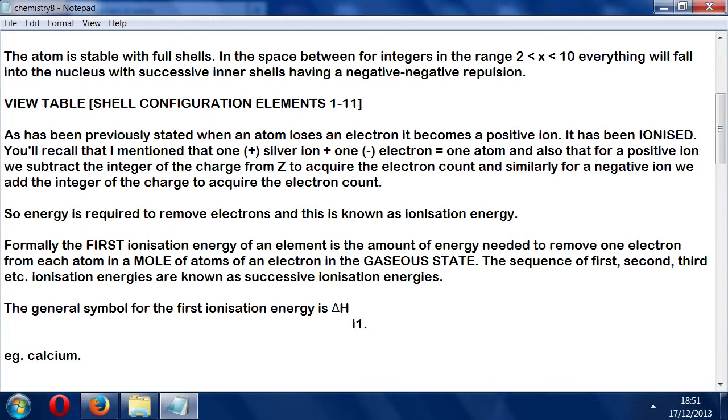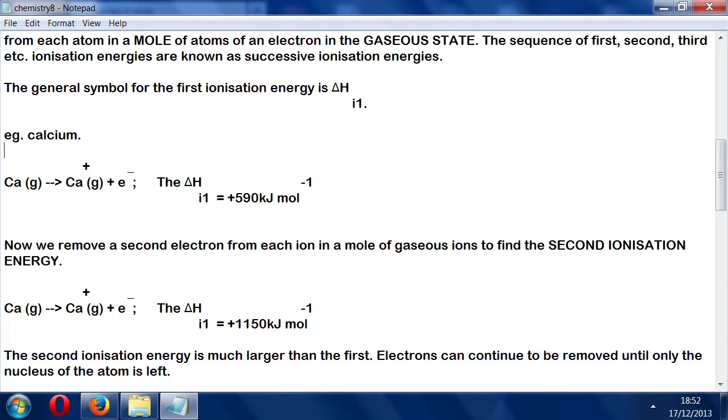The general symbol for the first ionization energy is ΔH sub I1. Let's take calcium. Calcium gas goes to calcium+ gas plus an electron, with a value of positive 590 kilojoules per mole. For the second ionization, calcium+ goes to calcium2+ plus an electron at 1150 kilojoules per mole. You can see the second ionization energy is much larger than the first.